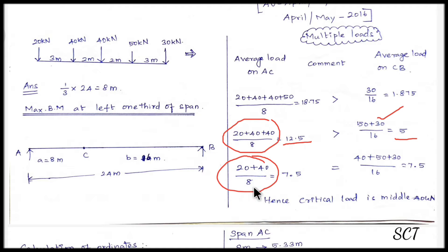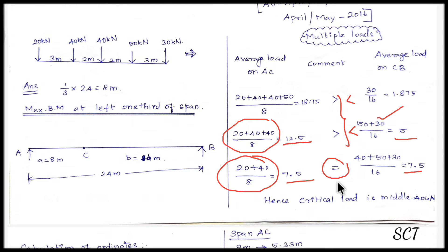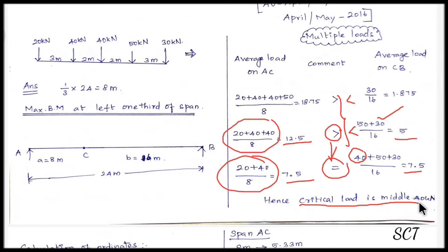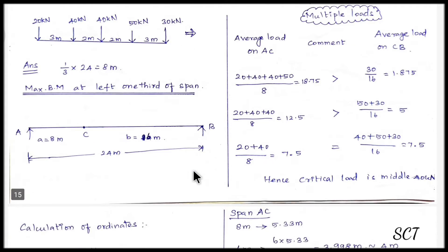Adding loads: 10 plus 40 gives 7.5. When the condition shows less than on one side and greater than on the other, the load that changes this condition is the critical load. The critical load is in the middle.